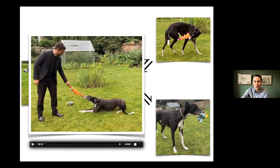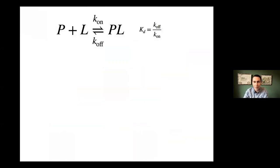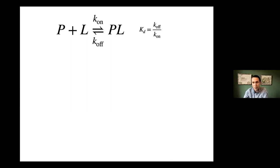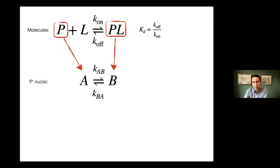For much of this talk we'll focus on the simplest kind of interaction: a protein P interacting with a ligand to form a complex PL. This is characterized by a KD, the dissociation constant, and two exchange rates — K on and K off, the association and dissociation rates. At the level of spins, we focus on the protein nuclei in different contributions: A-spins are the free protein, B-spin states are the protein in its complex. We look at the interconversion rate — the forward rate KAB and the backward rate KBA.